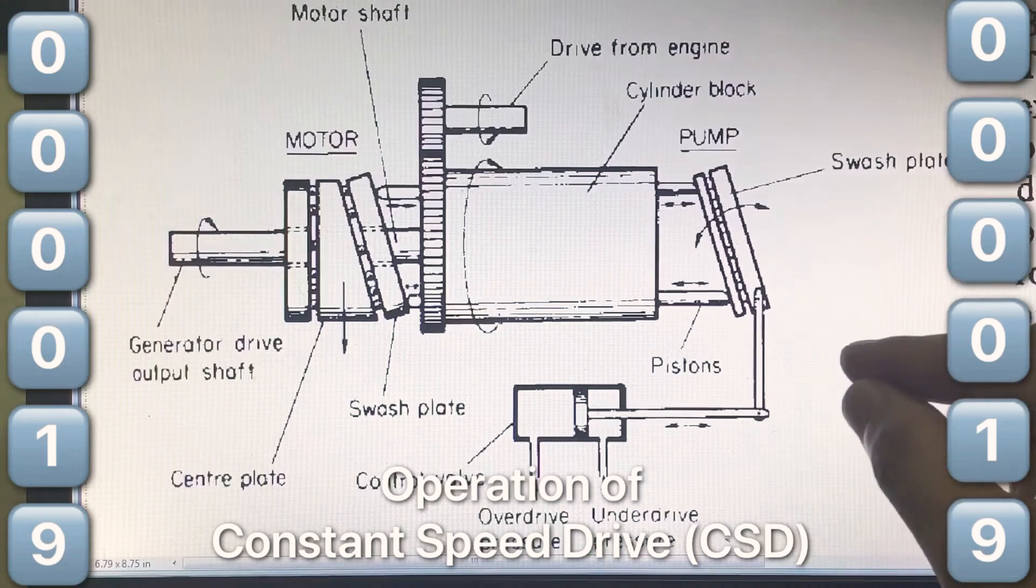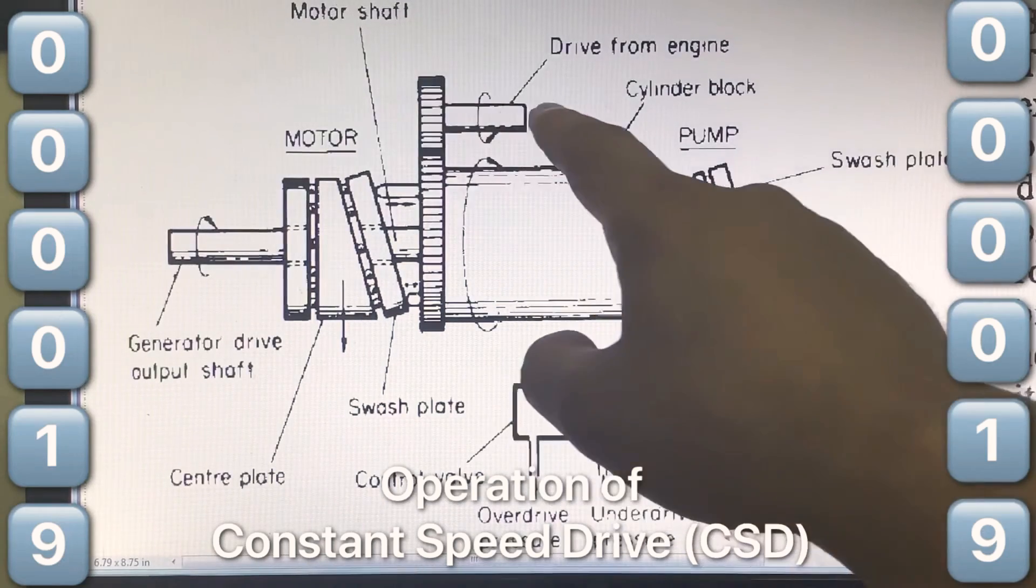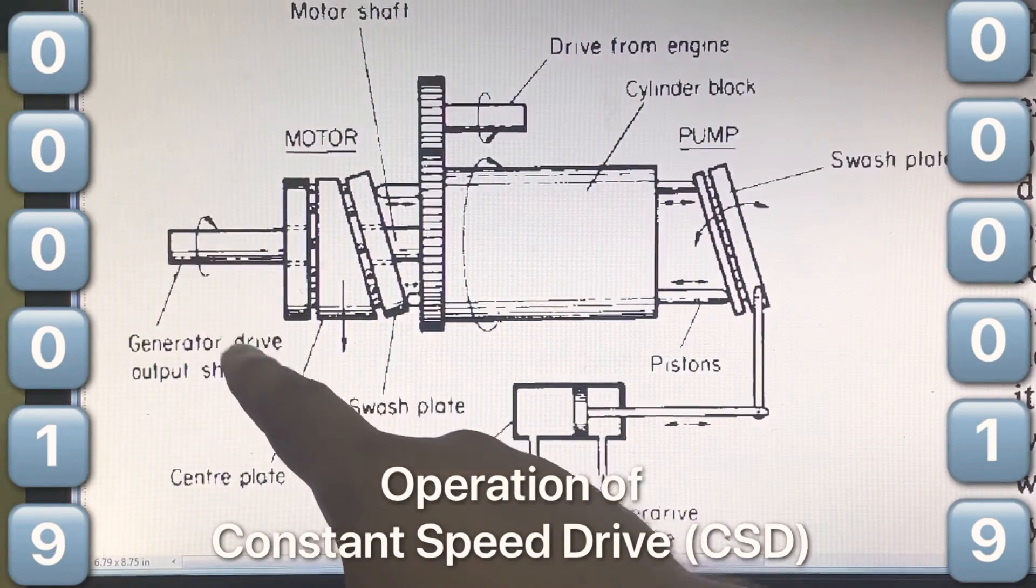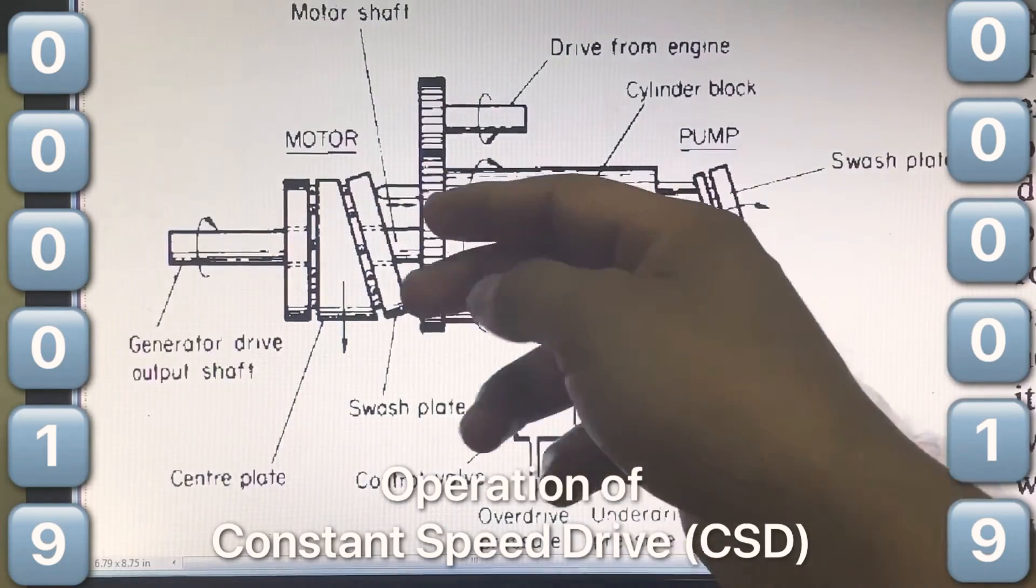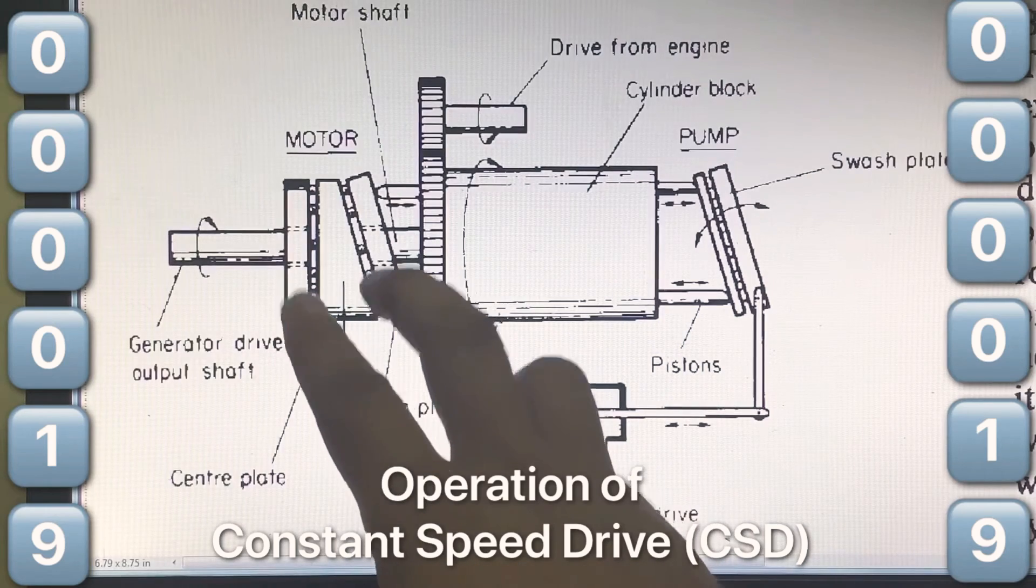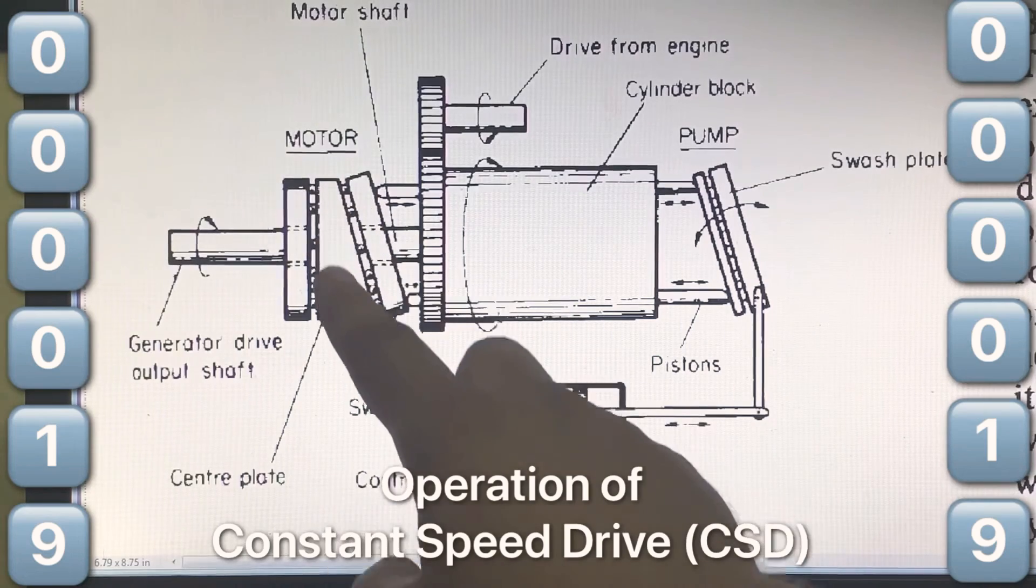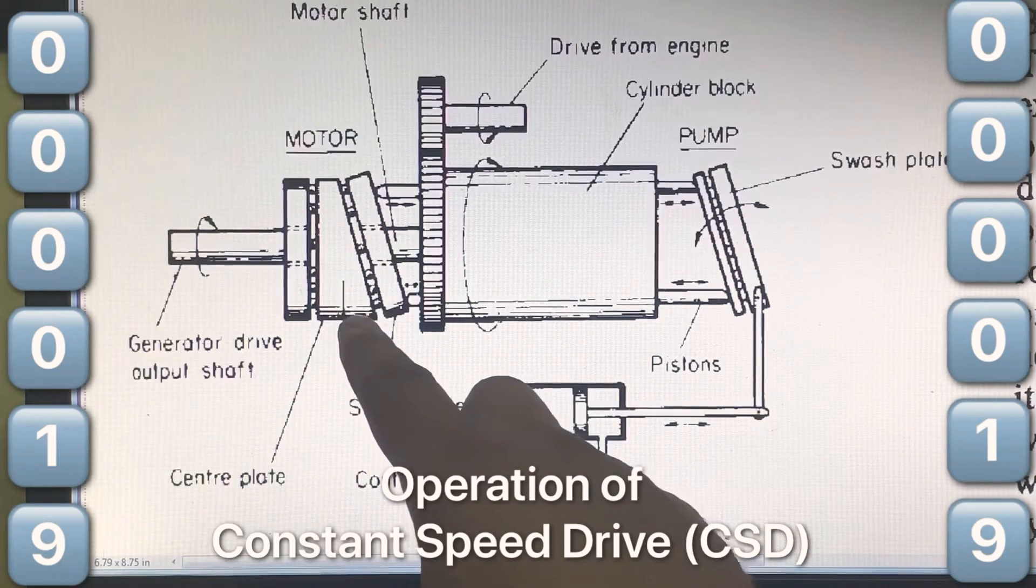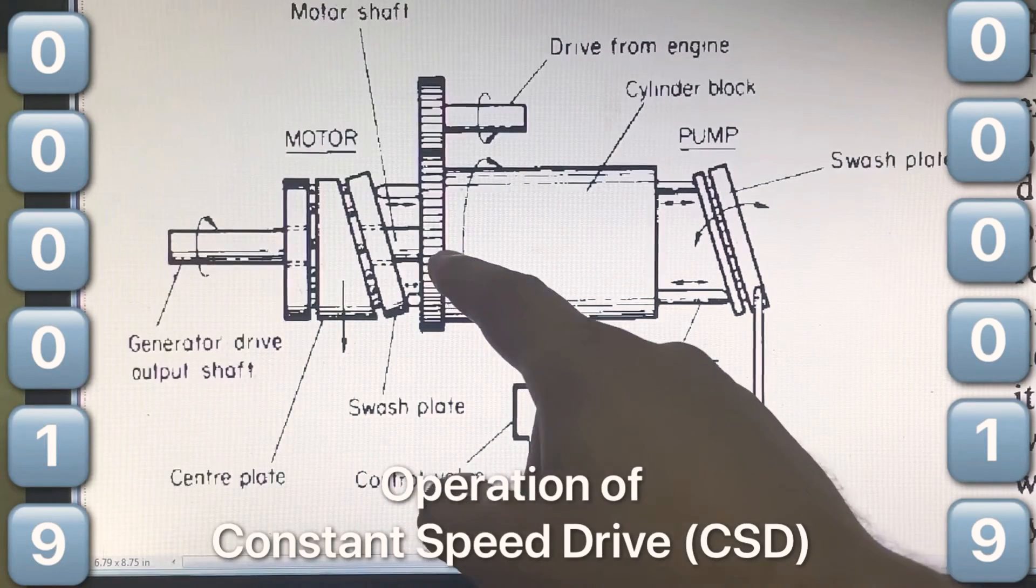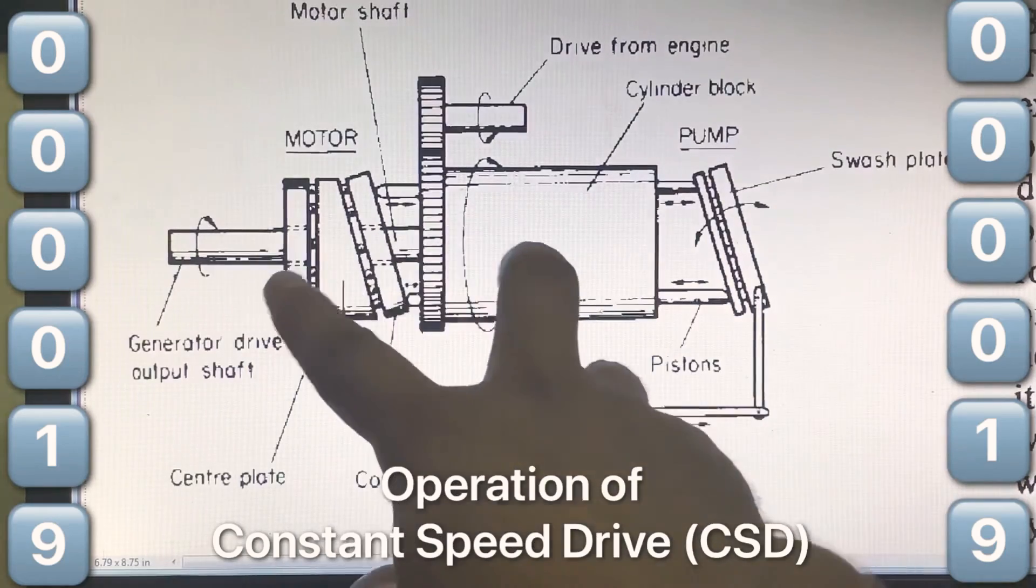If we assume that an overdrive condition is existing, that means when the engine input drive is lesser than the required generator speed, then an increased pressure will be exerted by the motor pistons on the center plate. And it will be as like this center plate is getting squeezed in between this. However, since this center plate is restrained to rotate independently about the fixed axis, it will do so relative to the cylinder block and at a faster rate.